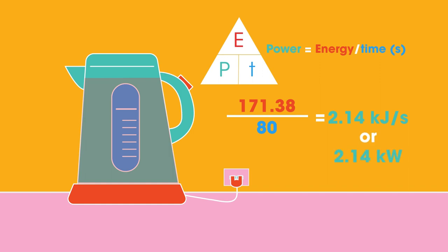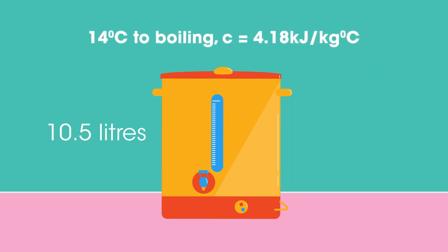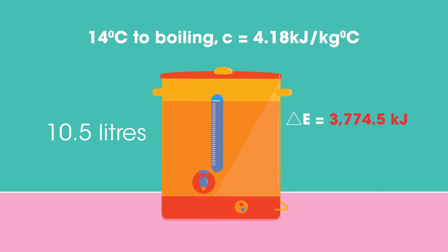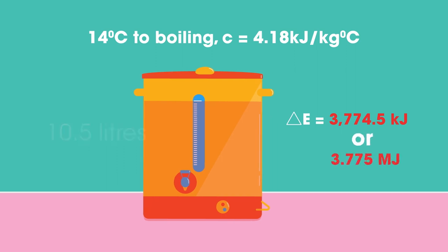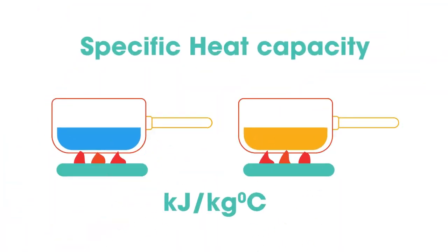So we get 171.38 divided by 80, which equals 2.14 kilojoules per second, or 2.14 kilowatts. This answer will be slightly lower than the actual power due to the kettle being uninsulated. This water boiler holds 10.5 litres of water — how much energy is transferred if the water at 14 degrees Celsius is heated to boiling point? Pause the video while you work it out. Did you get 3774.5 kilojoules, or 3.775 megajoules?